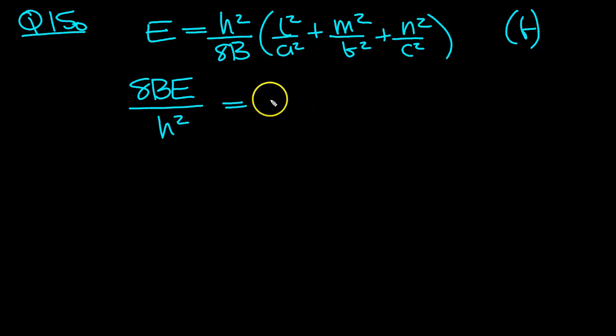Now we've just got these three terms, which we can write as L squared over A squared plus M squared over B squared plus N squared over C squared. There we go.